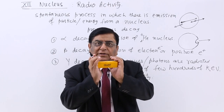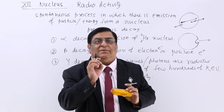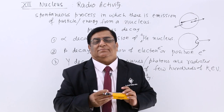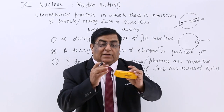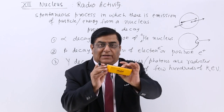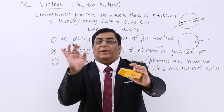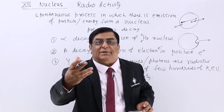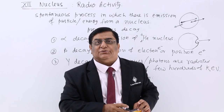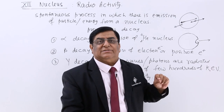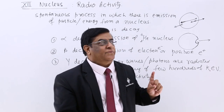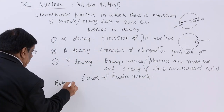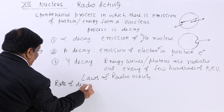If it is a small collection, the rate of decay will be small — say 2 per second. If the collection is very large, the decay will be 5 per second or 10 per second. So the rate of decay depends upon the total number of nuclei present.